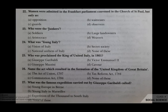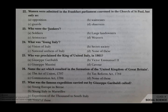Who were the Junkers? Your options are A soldiers, B large landowners, C aristocracy, D weavers. The correct answer is B — the Junkers were large landowners.